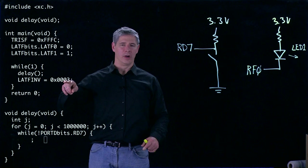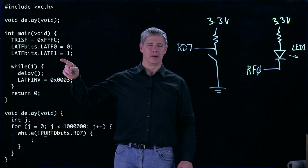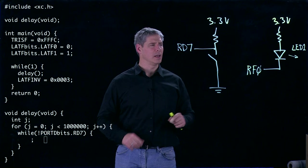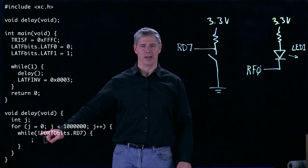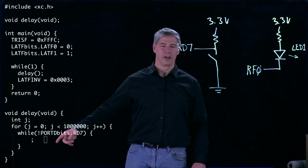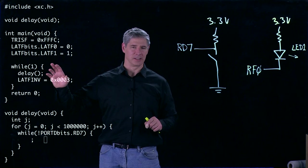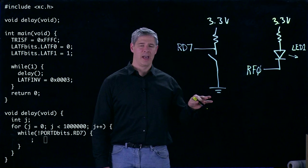And then what this line here does is it's going to invert the values of F0 and F1. Therefore, one's going to turn off and one's going to turn back on. If we're pressing the button, though, then RD7 is going to evaluate a zero. We take the logical not of that, becomes true. It's going to stay stuck in that while loop forever, and only when we let go of the button is it going to be able to continue going through this for loop and exit delay and alternate the two flashing lights.